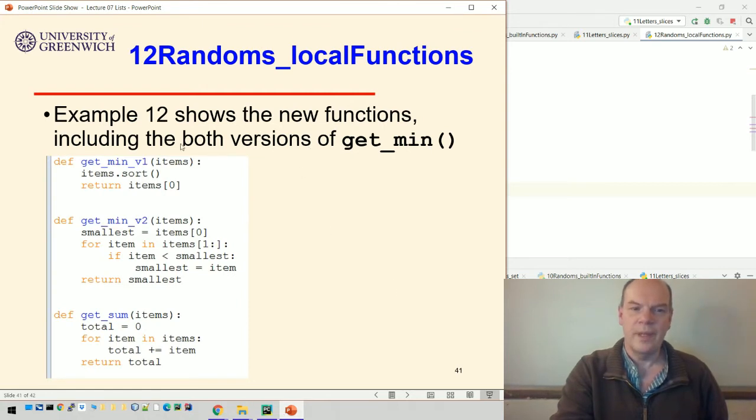So get min version one shows you the using the sorting, which I think is a bad idea. Get min version two is the better idea. And then get the sum, we set this total to zero and then we loop over all the items in the list and add them into the total.